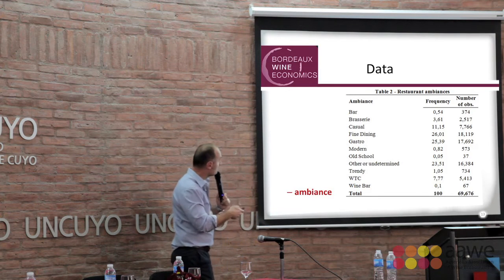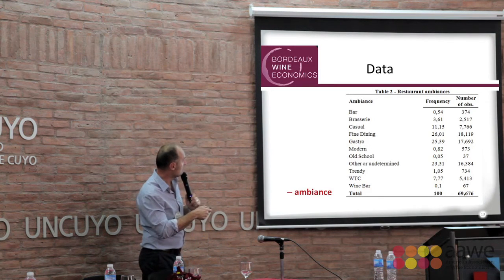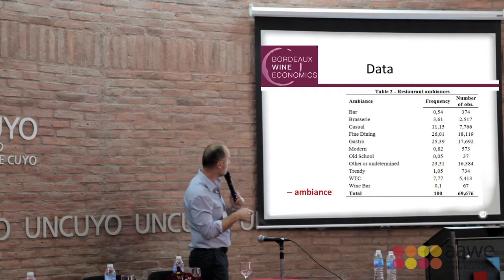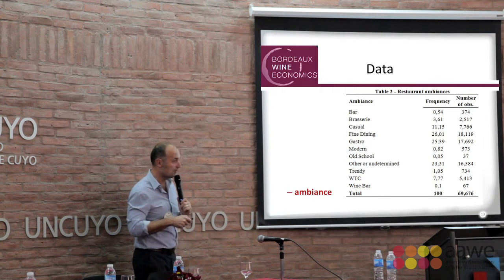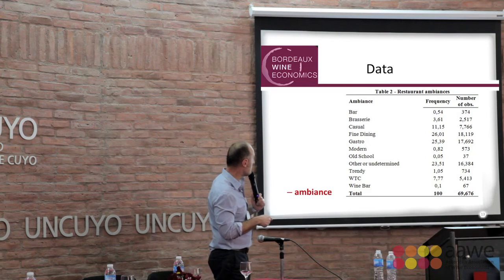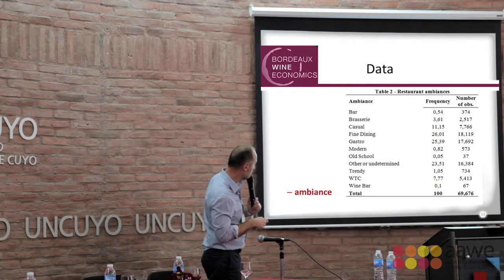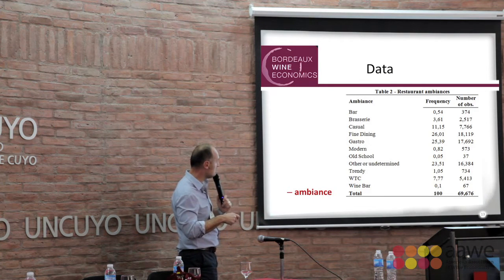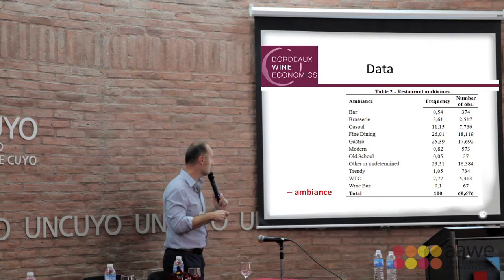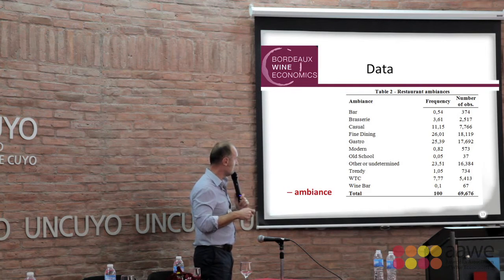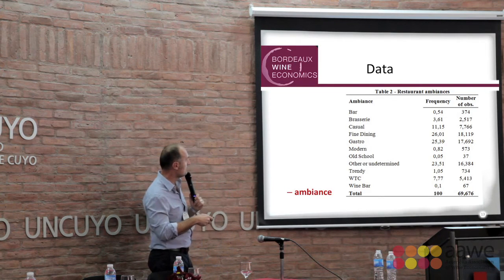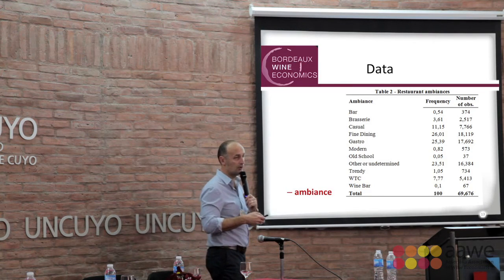We have this kind of ambience classification: there is a bar category, which we can largely neglect. Mainly we have fine dining restaurants and gastro restaurants — the sum of those two classes is more than 50%. We also have white tablecloth restaurants, which is roughly equivalent to gastro or fine dining. For us, that's a variable of horizontal differentiation.